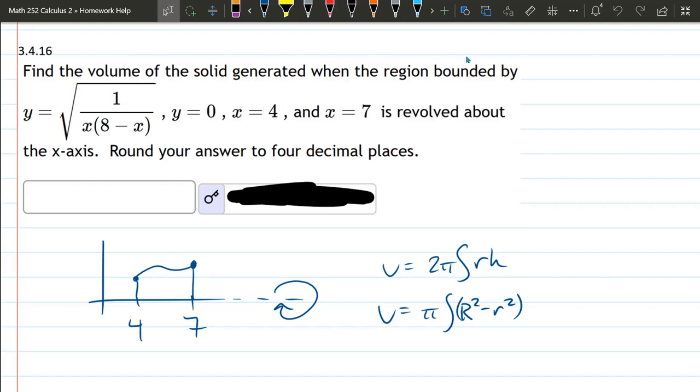So I've written a few things down here that will be true regardless of how we decide to integrate this. This is a solid of revolution that we want to find the volume. So there's two methods. There's the washer and the shell. I have the two formulas written down here.